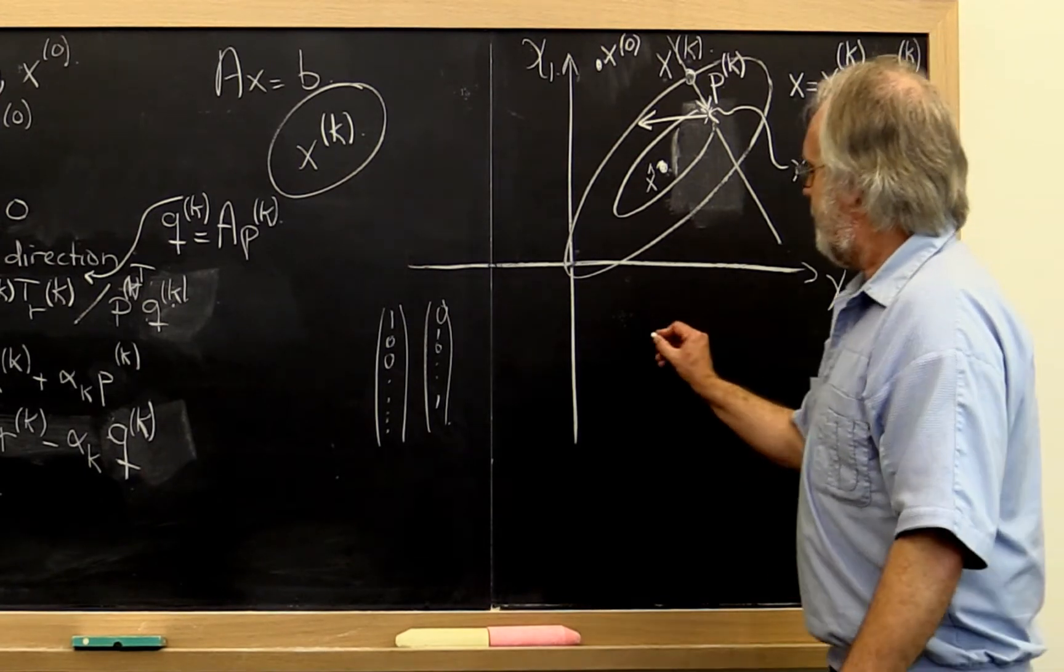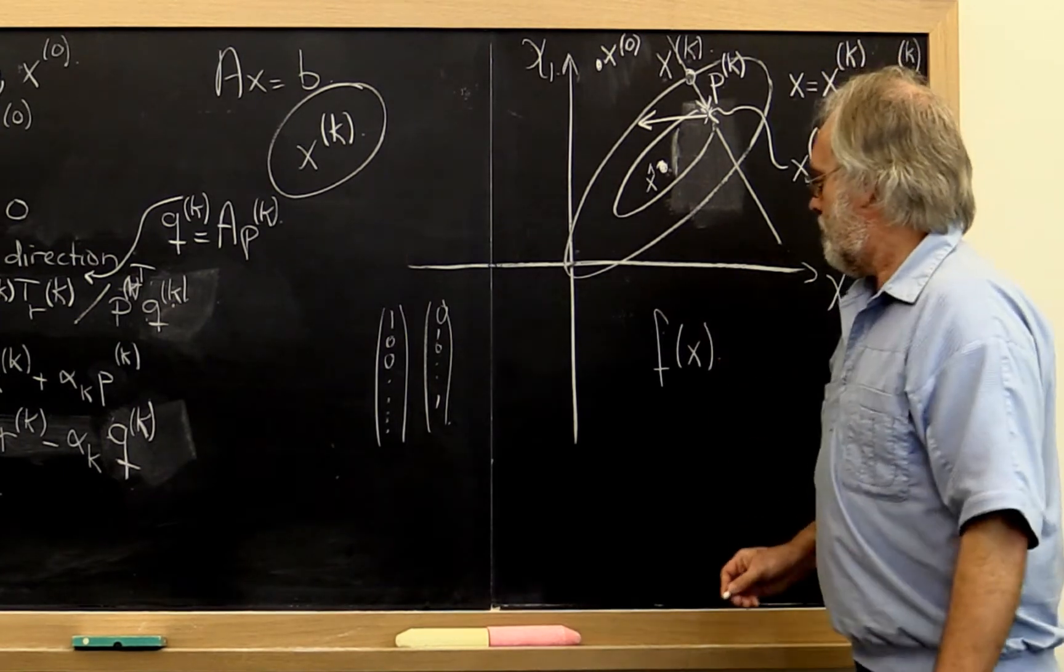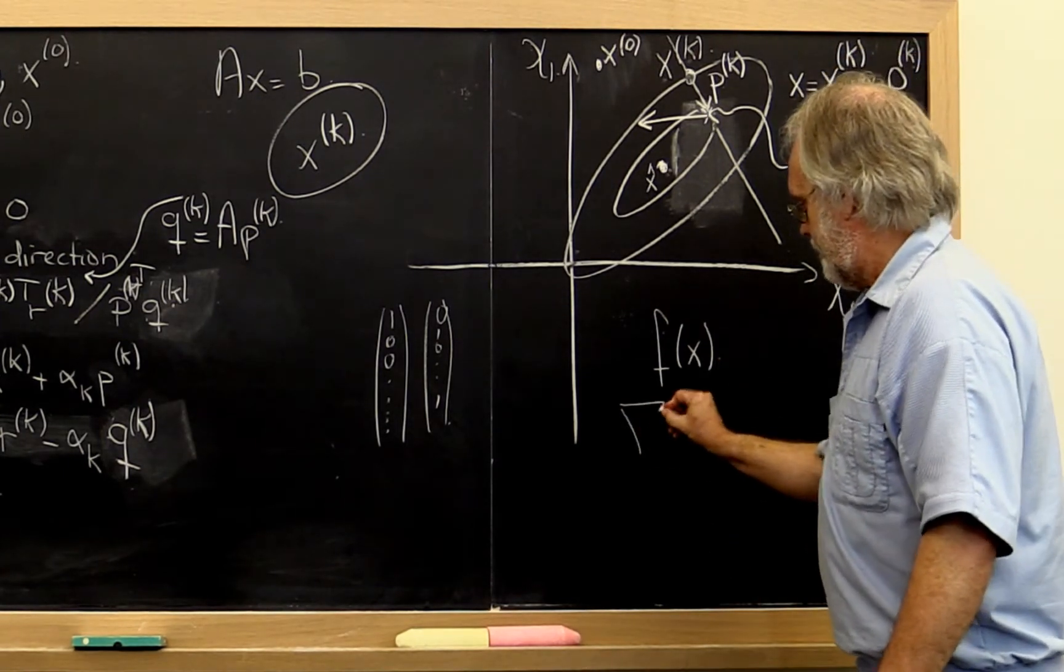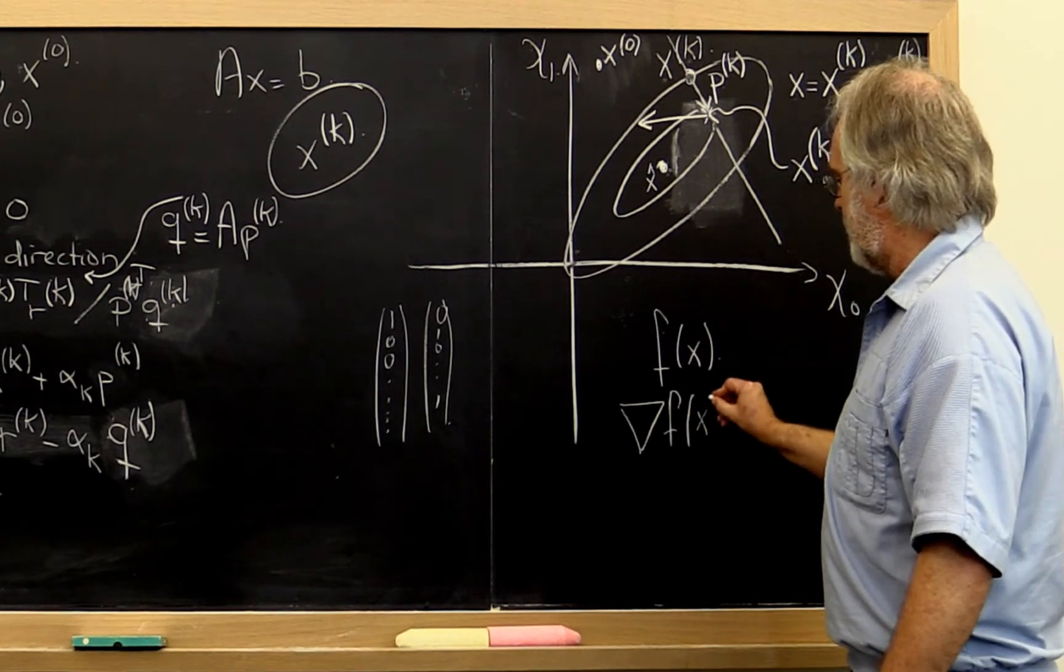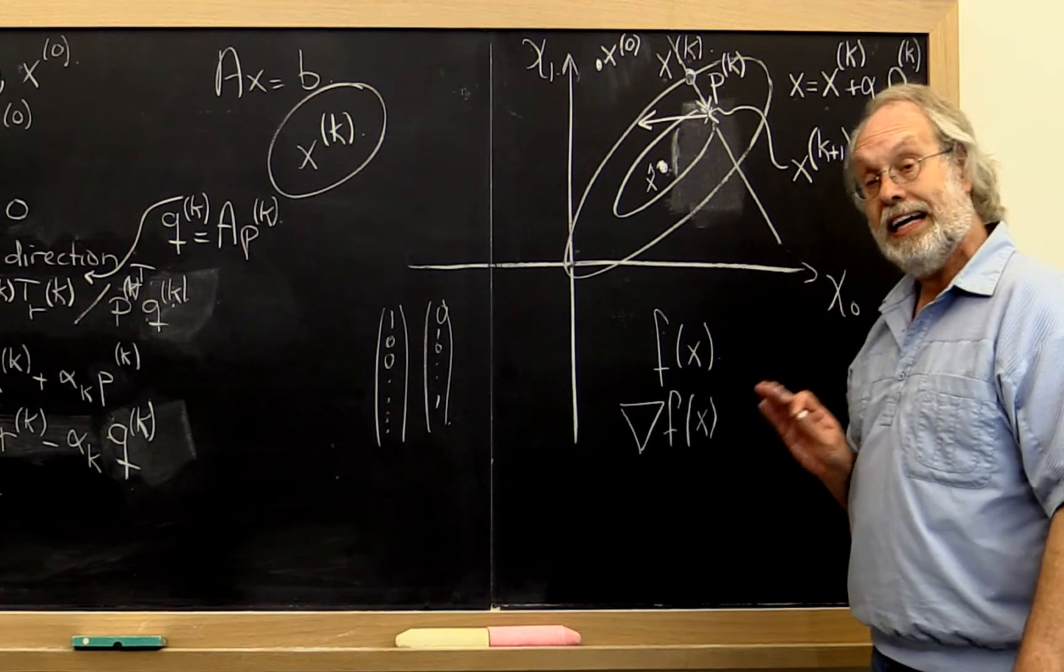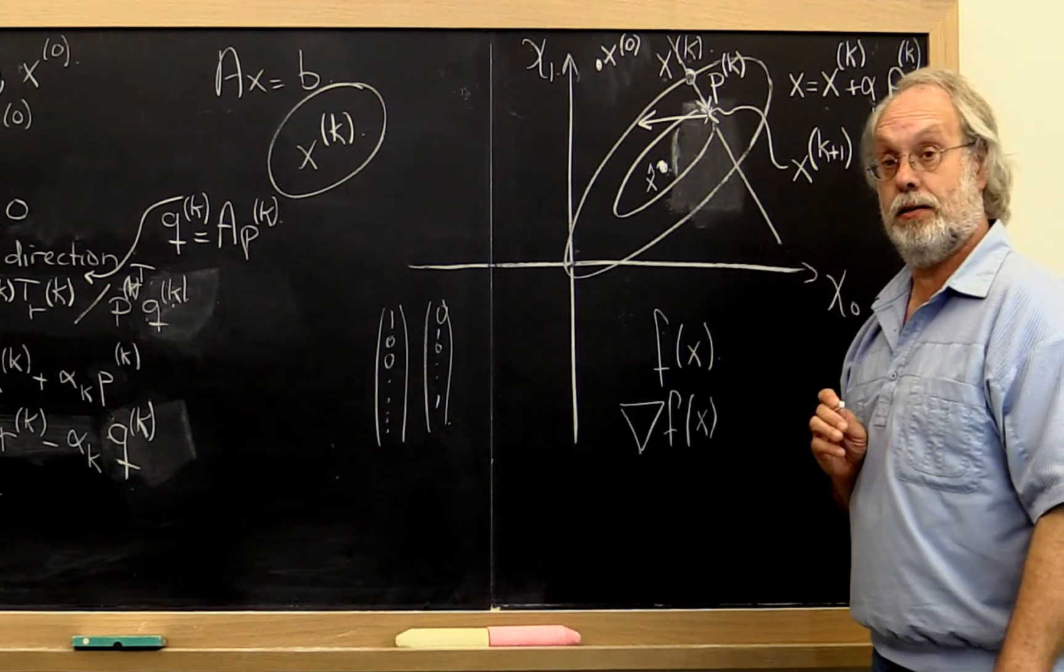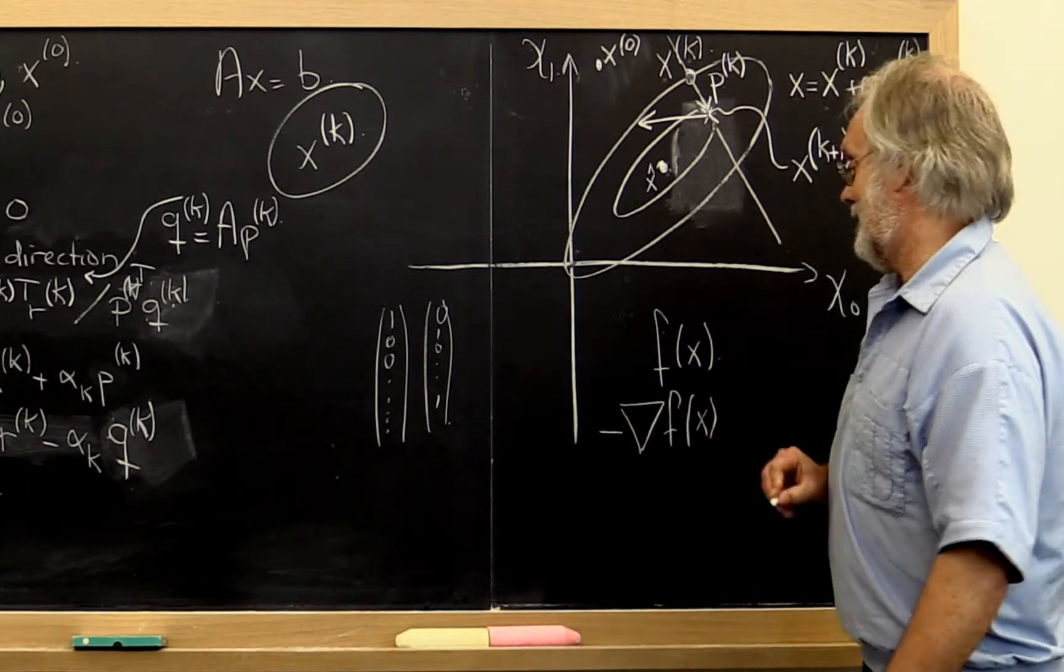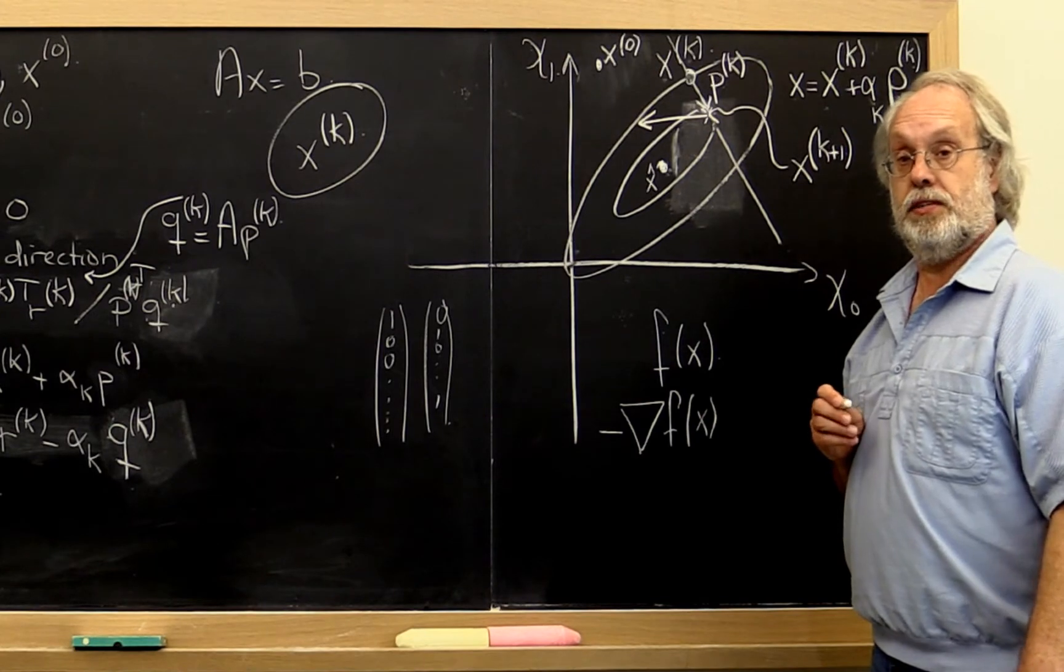If you have a general function f of x, then the gradient of that function at that value x is actually the direction of steepest ascent, the direction in which you increase most rapidly. And therefore, it is minus that that is actually the direction of steepest descent.